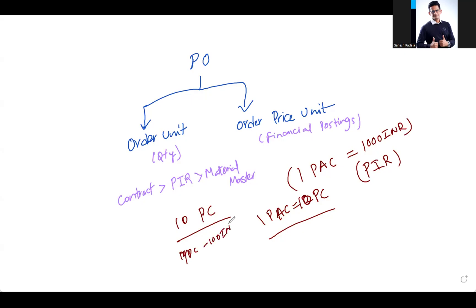The order price unit will be different when the vendor tells you: 'You order in quantity, I will send you in pieces only, but my pricing will be sent by packs.' For such a complex requirement you can use order price unit. But as much as you can, try to use both order unit and order price unit as the same, so that certain confusions and challenges can be avoided. Let's go to this topic in SAP.